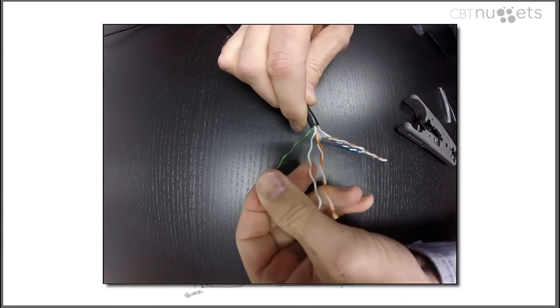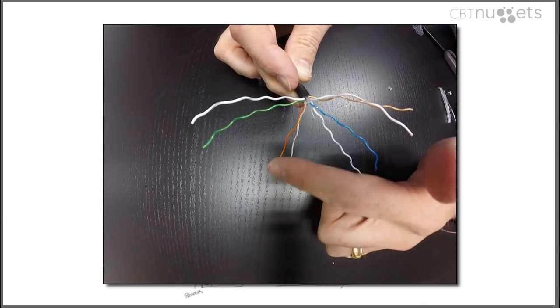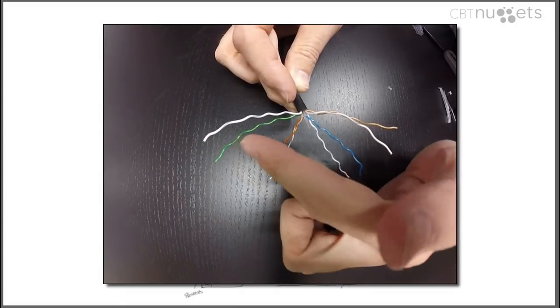You want to untwist it as far down as you can, right to that shielding. There we go, individual wires: orange, orange stripe, blue stripe, blue, brown stripe, brown, green, green stripe.